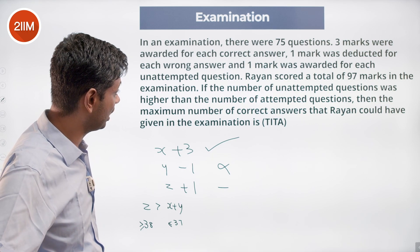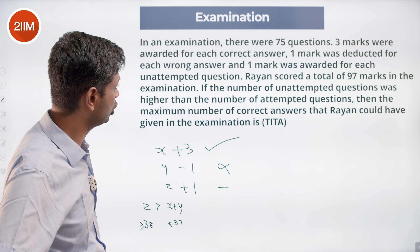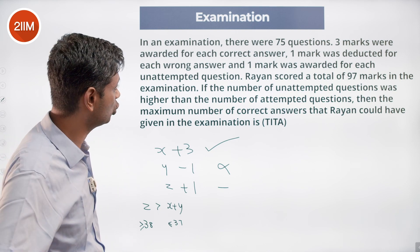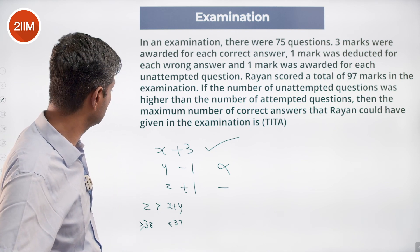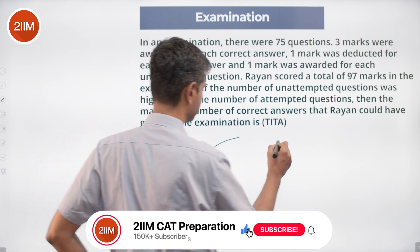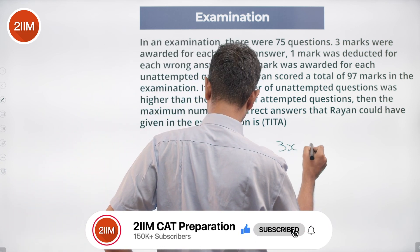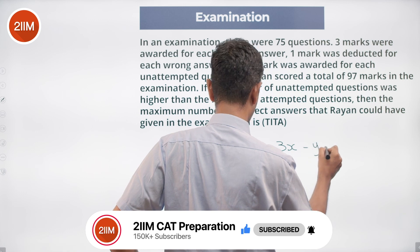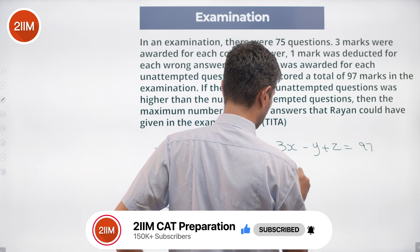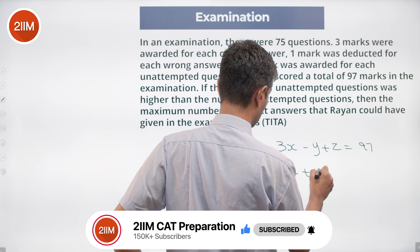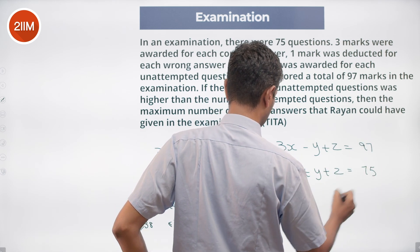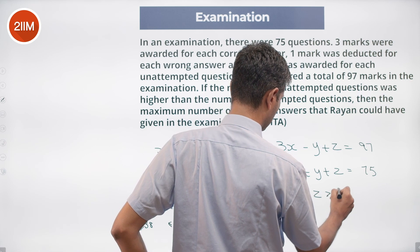Ryan scored 97 marks total, so we can write: 3X minus Y plus Z equals 97. We also know X plus Y plus Z equals 75, and Z is greater than or equal to 38. This is where we stand.